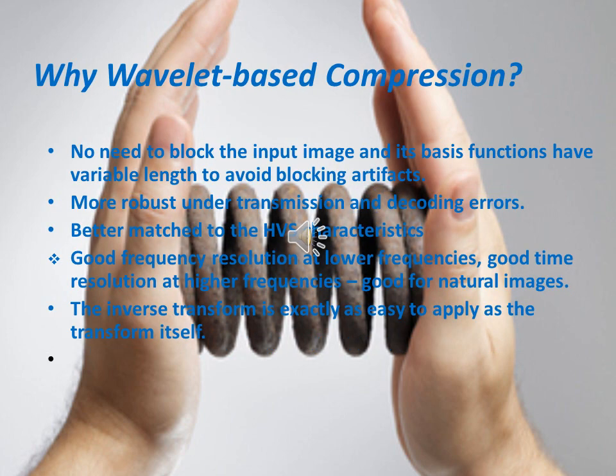These are a few reasons why wavelet-based compression is preferred over other image compression techniques. There is no need to block the input image, and its basis functions have variable length to avoid blocking artifacts. The inverse transform is exactly as easy to apply as the transform itself. And even though rough thresholding is worse, the reconstructed signal still follows the shape of the original signal quite well, except in the neighborhood of points where the signal oscillates heavily.